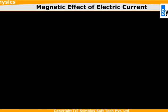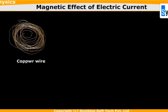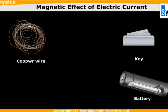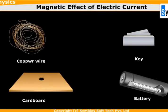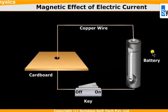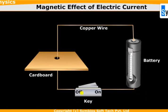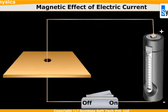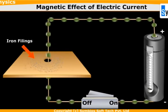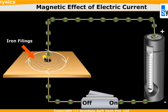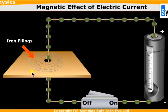Let's discuss one more demonstration about magnetic field created around a conductor. We take copper wire, a key, a battery, and cardboard with a hole through which the conductor is passing, connected across the battery's positive and negative terminals with a key to switch it on and off. Spread iron filings on the cardboard - when current flows, the iron filings form concentric rings around the conductor.